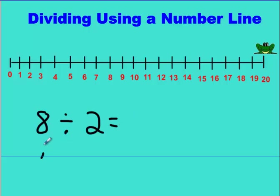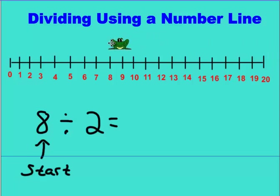What you do is you start at the first number. You put your frog at that number, so you put him at 8. That's step one. The second step is you have to look at the second number and understand what that number means. That number means how big the frog's jumps are going to be — how large the jumps are going to be. The size of the jumps is going to be two numbers; he's going to skip two numbers at a time until he gets to the end.